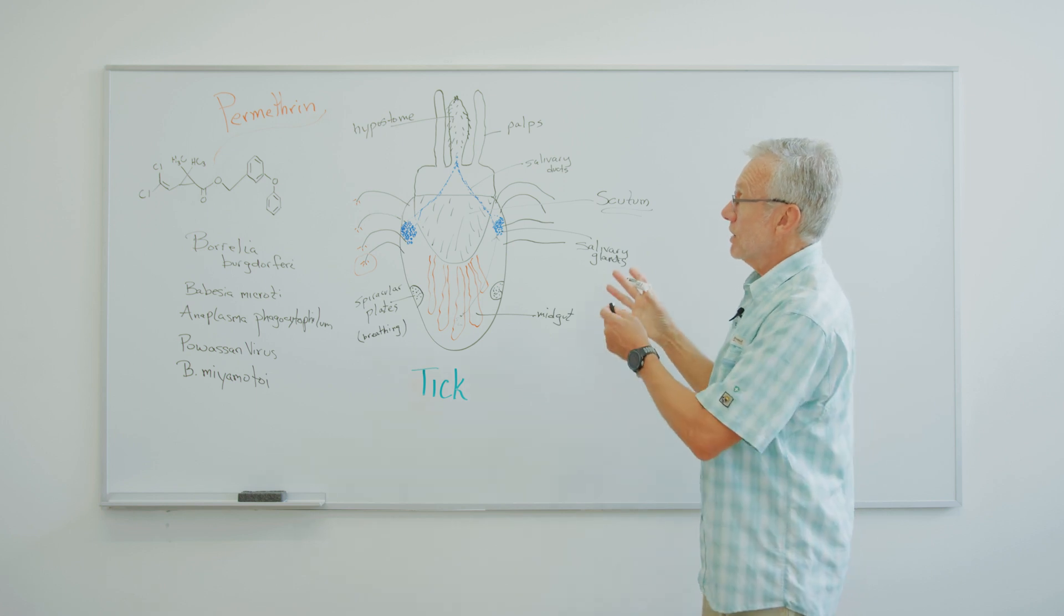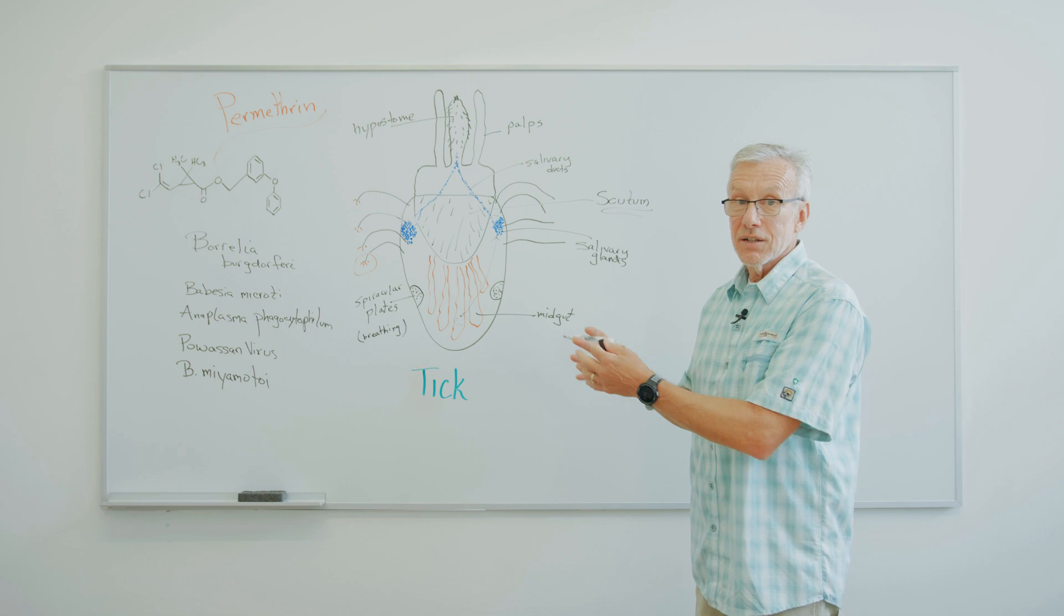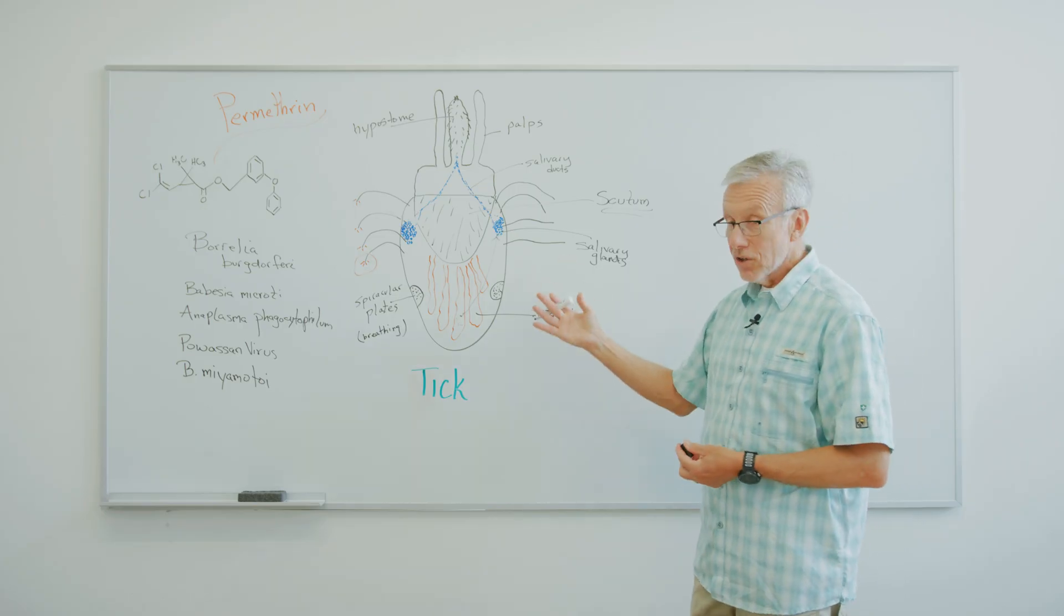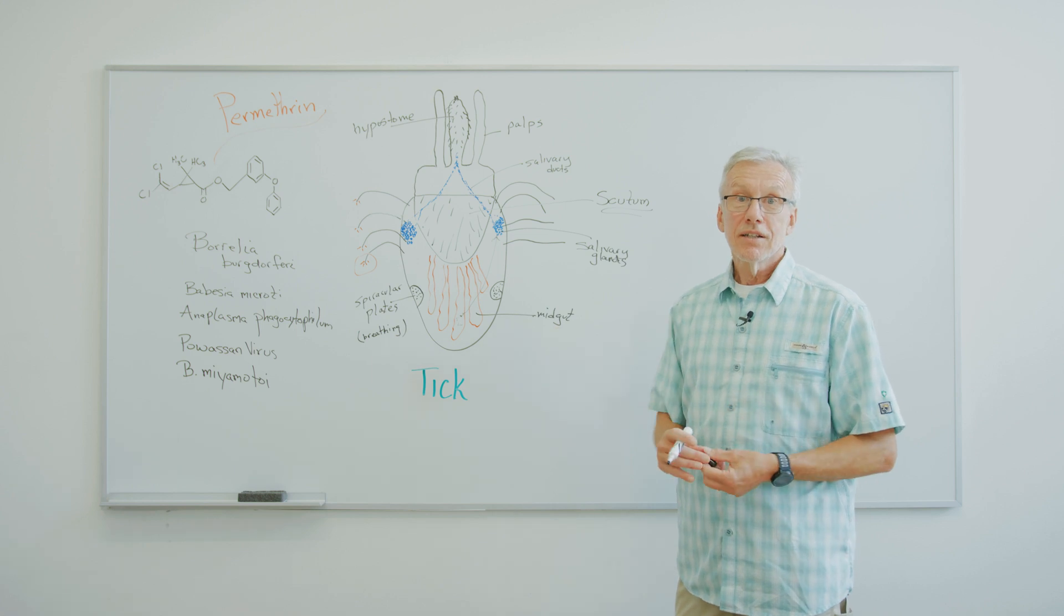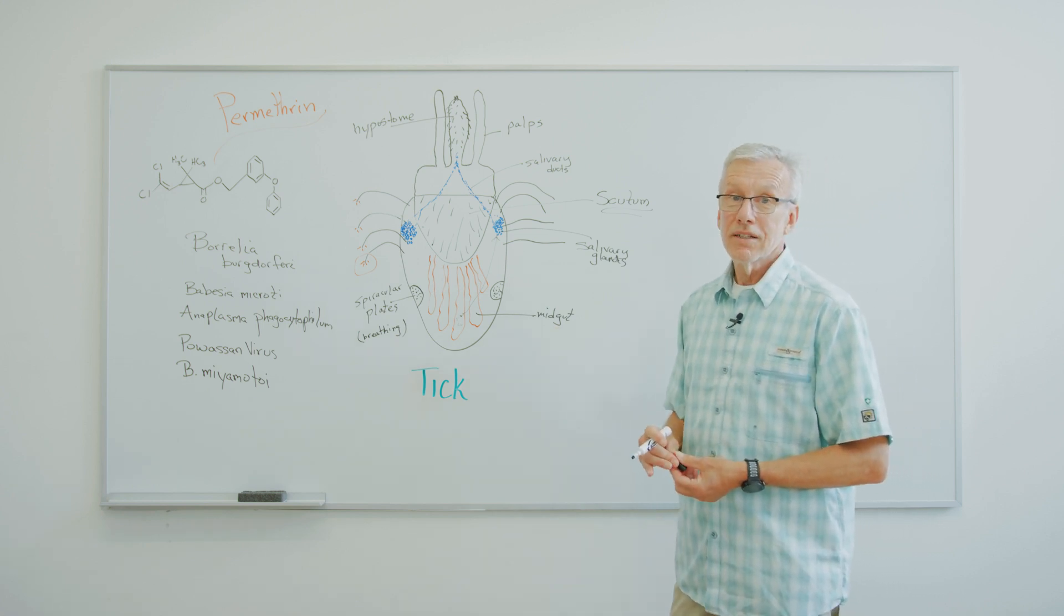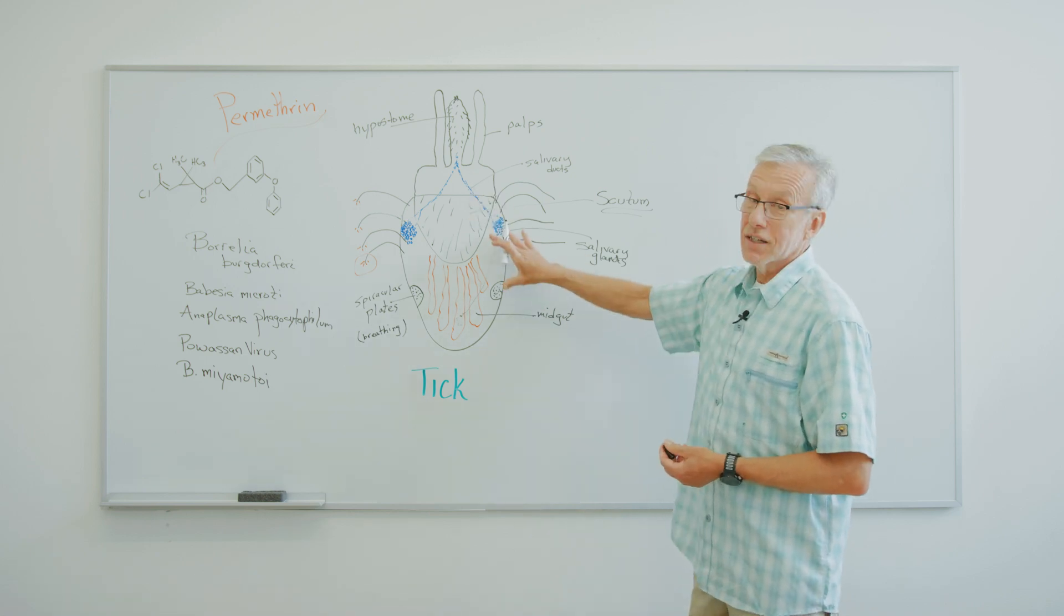And it causes the tick to become extremely excited. And as it's excited, it then will fall off. And within 24 hours, all of the ticks that had fallen off were dead. And so it's an insecticide as well as a repellent. And so that's the magic of permethrin when it comes to ticks.